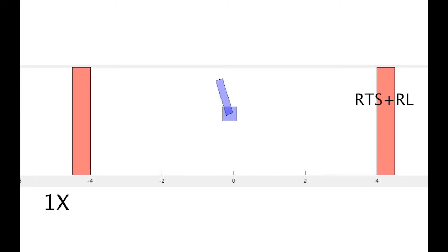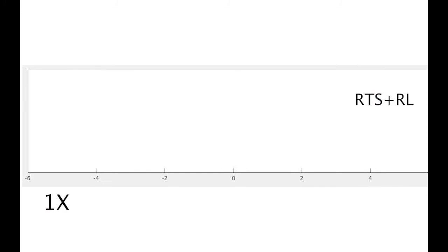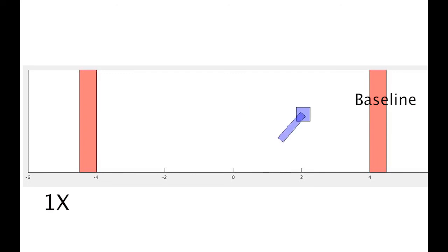We also demonstrate our method on a cart-pole swing up task with obstacles on both ends. The cart-pole example shows that our method ensures safety during training when the policy is randomly initialized. On the other hand, an agent trained without RTS repeatedly hits the wall with the initial policy.